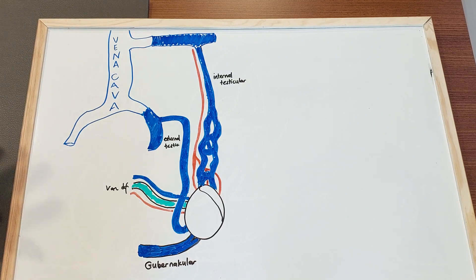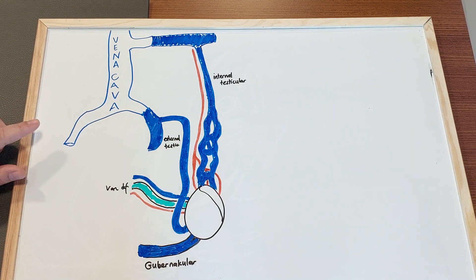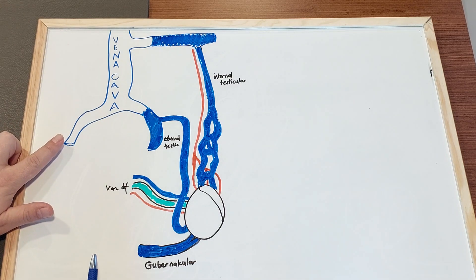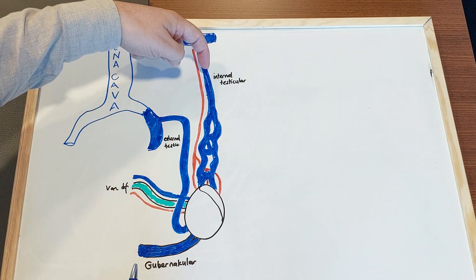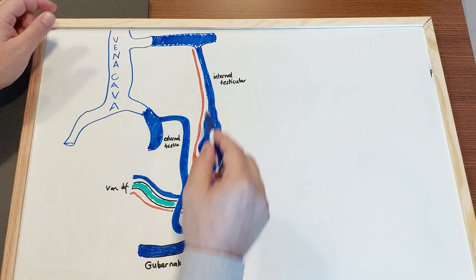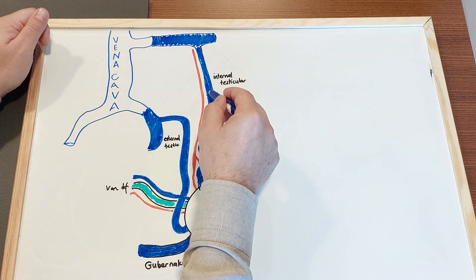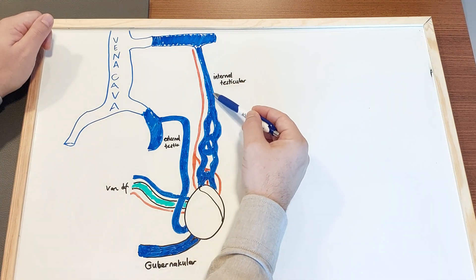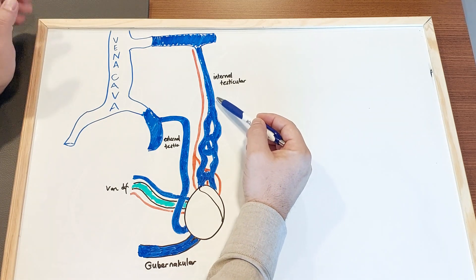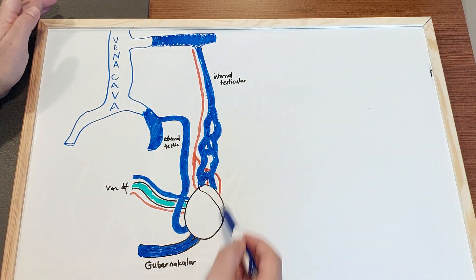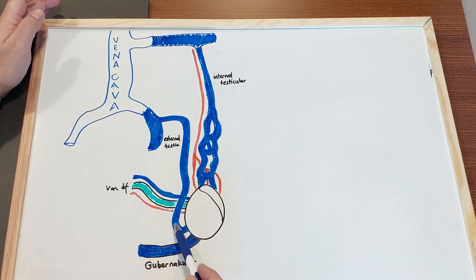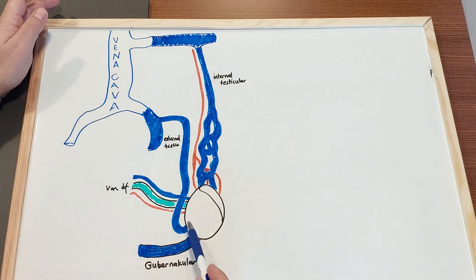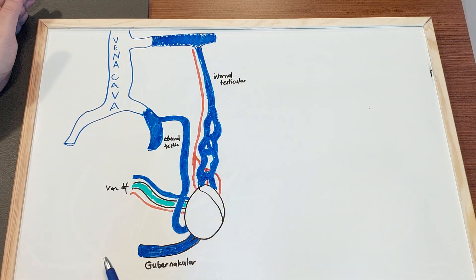To make it simpler, in embolization as you know they come from the venous system and go into the internal testicular veins and put a coil here. This coil stops the blood flow here and we expect all of the vascular structures, all of the varicose veins will disappear and the testis will be healthy.